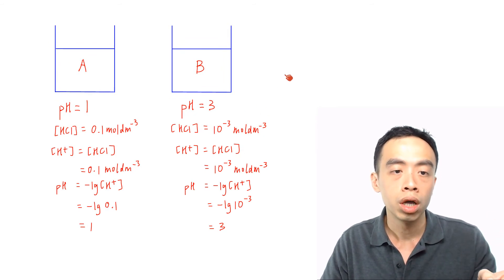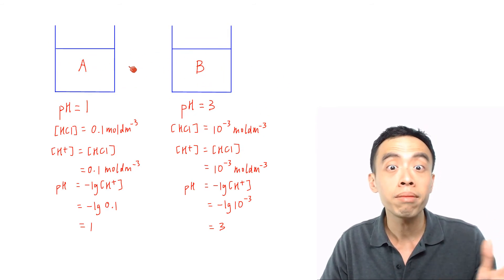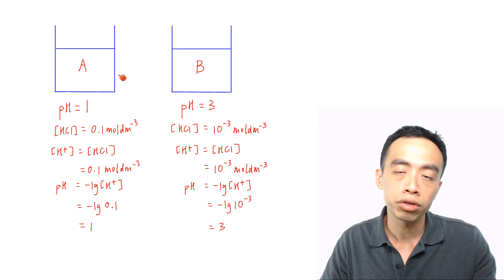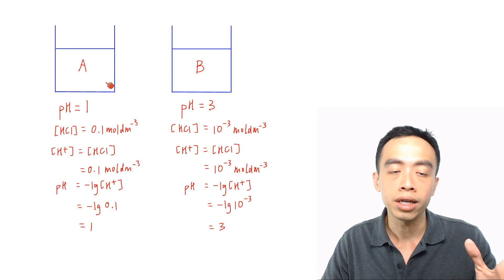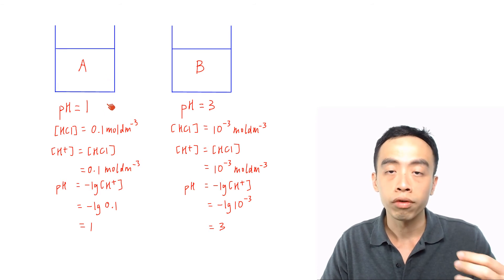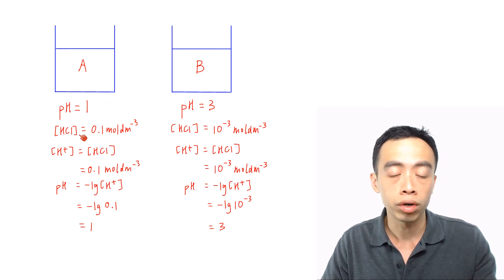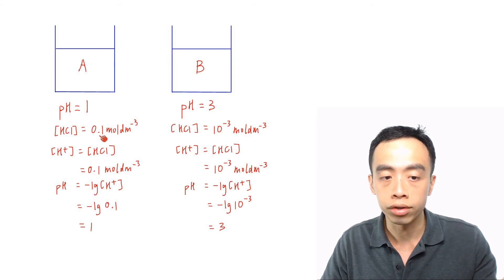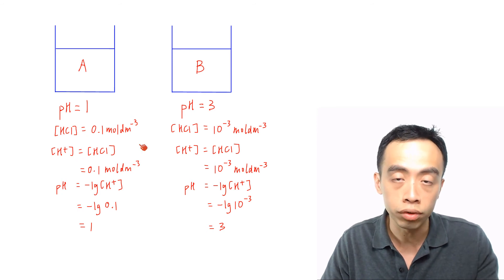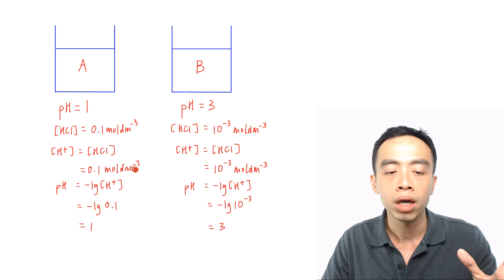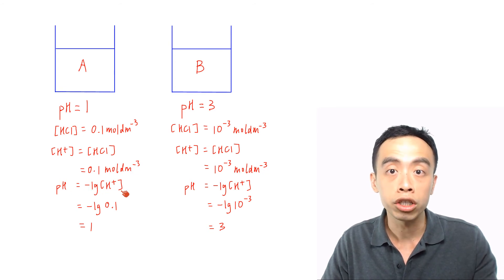Now we have scenario 2, where both A and B are the same acid, but because the concentration of the acid is different, they end up at different pH values. So here, A has pH equal to 1. For example, if we use HCl — a strong acid — for solution A, the HCl concentration is 0.1 mol per dm³. Since strong acids are fully dissociated, the H⁺ concentration equals the acid concentration, so H⁺ concentration is 0.1 mol per dm³, giving pH equal to 1.